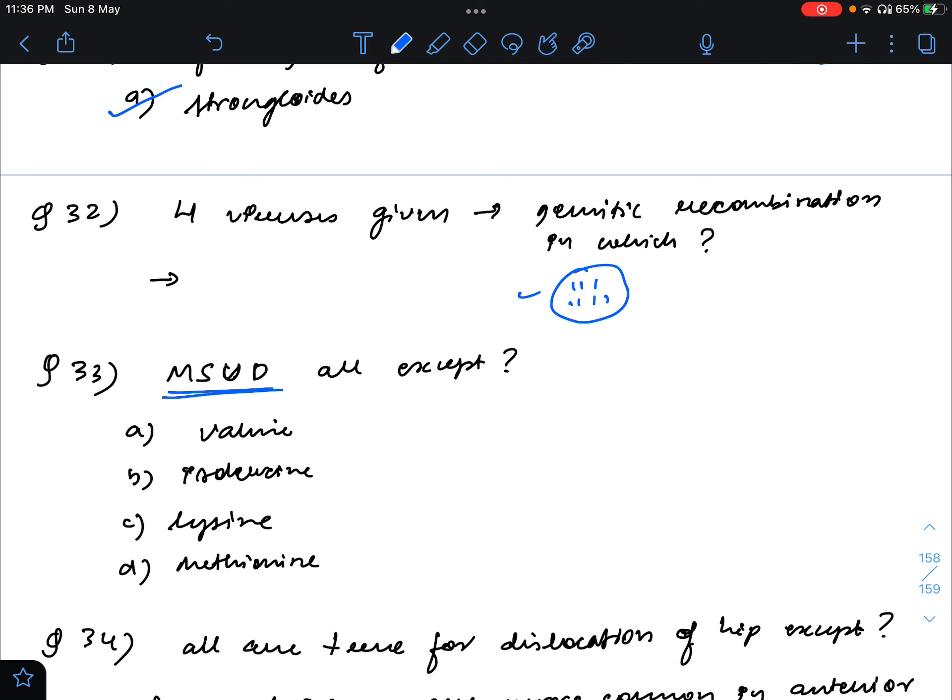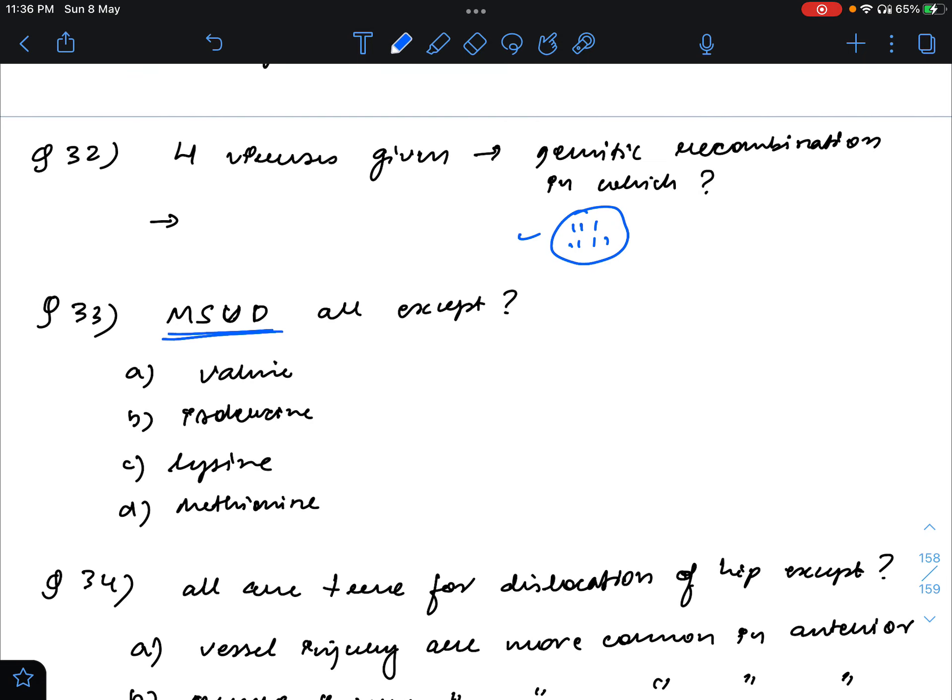The maple syrup urine disease, all are included except. So basically this is seen with branched chain amino acid. Therefore valine, isoleucine and leucine, that is VIL, comes under the branched chain amino acid, so answer will be tyrosine.